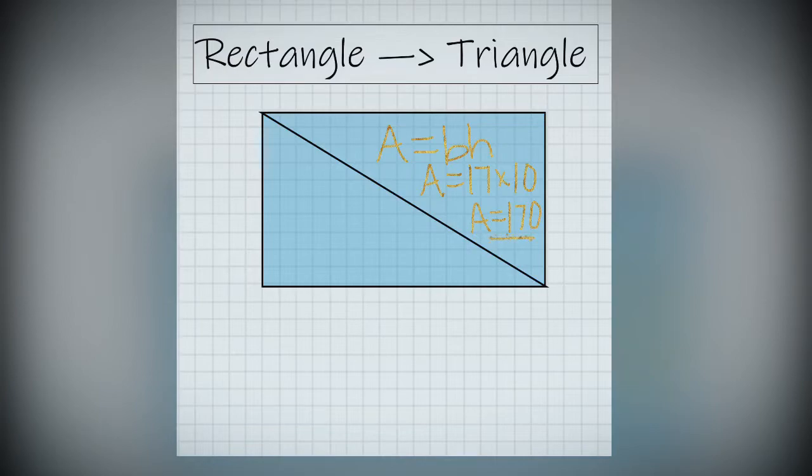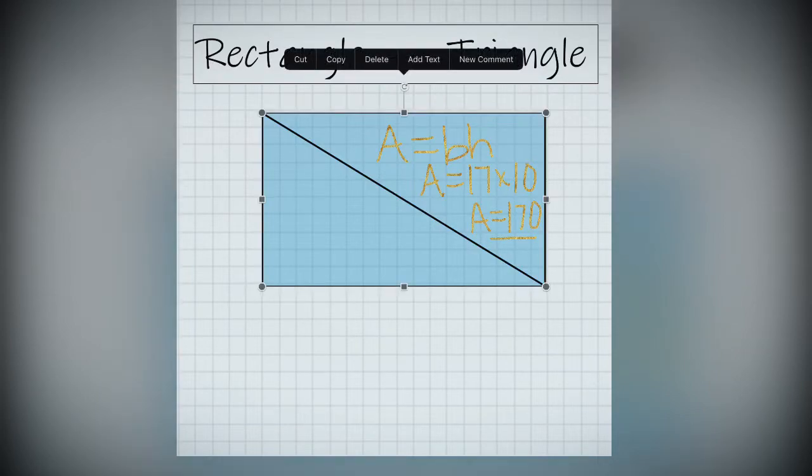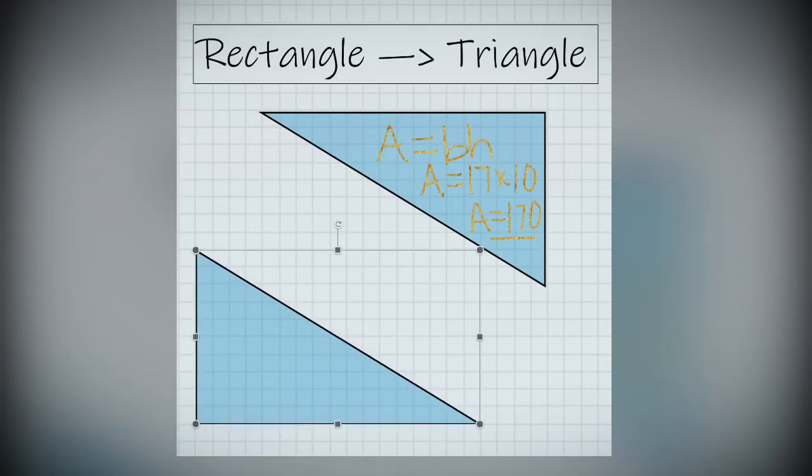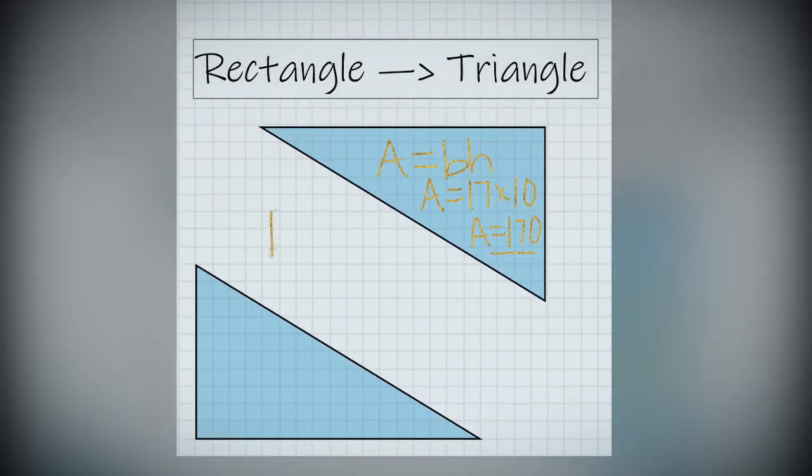I'm sure you're starting to see what shapes are made, but I want to show you what happens when I actually pull one of the shapes away. Here you see two perfectly equal triangles. So if together, we have an area of 170, we're going to split that in half so that each triangle gets the exact same amount of 85.